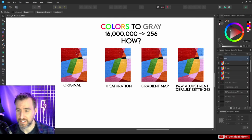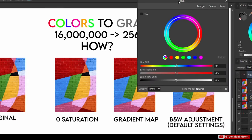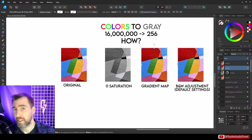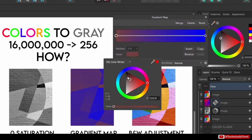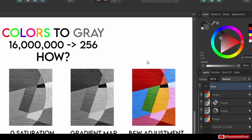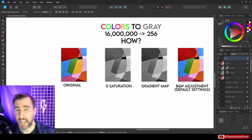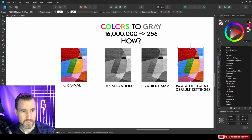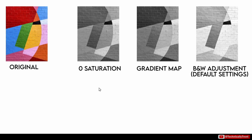Let's look at three different ways to make this colorful wall painting black and white. First, I'll reduce the saturation to zero using an HSL adjustment — and we can see it is black and white. Another way is to add a gradient map going from black on one end to white on the other. You can already see a difference in that version. As a third way, I'll add the actual black and white adjustment layer — and you can see a drastic difference, it's much brighter than the other two.